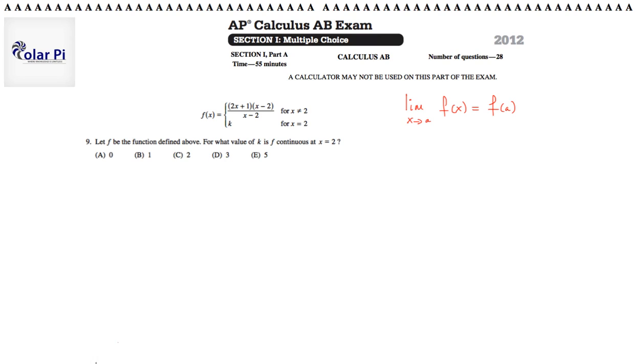So we adopt this to this particular situation, and therefore we must write limit as x goes to 2 of f of x is equal to f of 2.